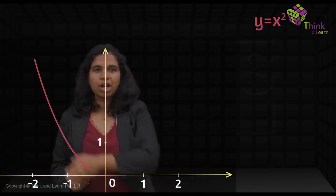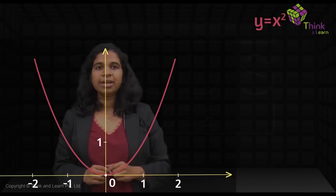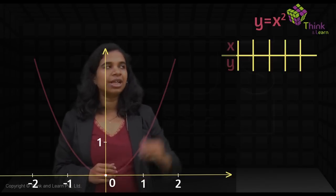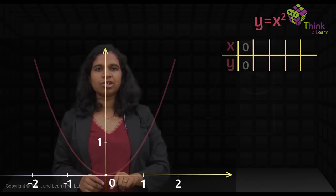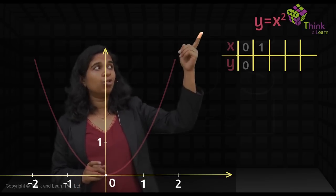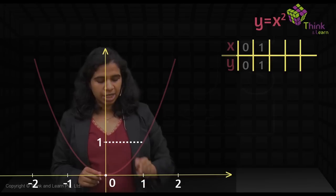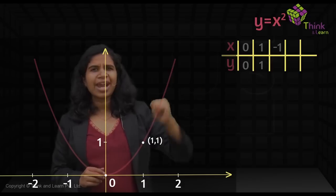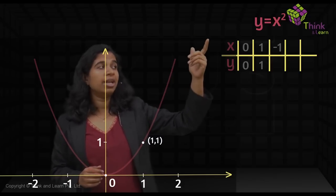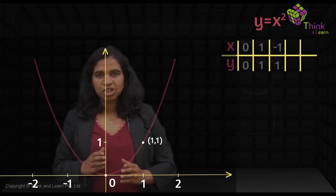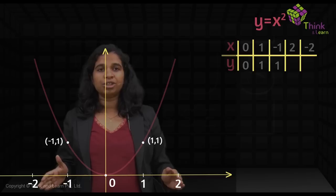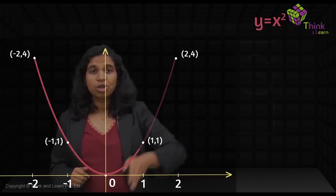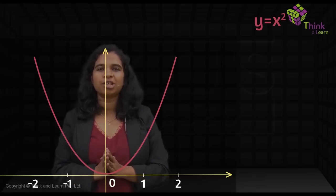For y = x², with x and y axes, the graph is a parabola that passes through the origin. When x = 0, y = 0 — that's the origin. When x = 1, y = 1. When x = −1, y is also 1 because (−1)² = 1. Similarly, x = 2 and x = −2 both give y = 4. That's how you get this nice symmetric curve.